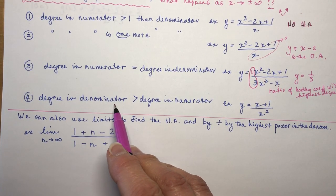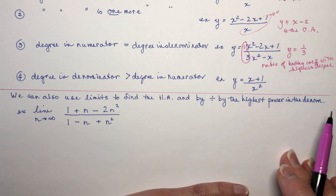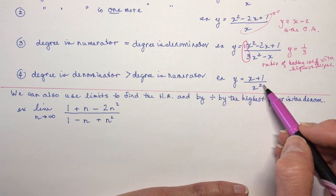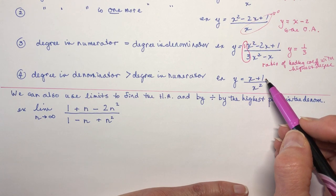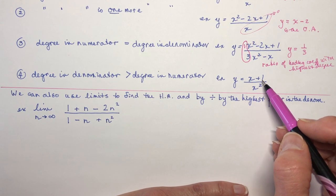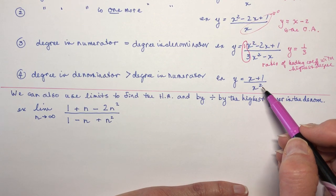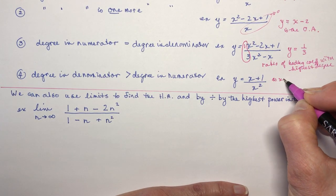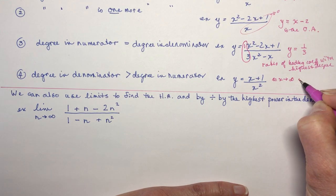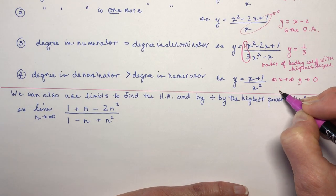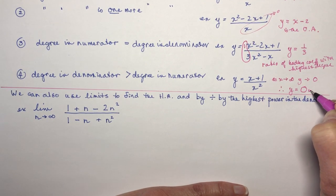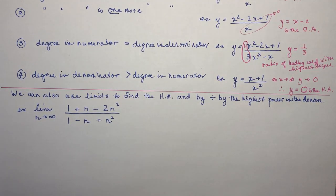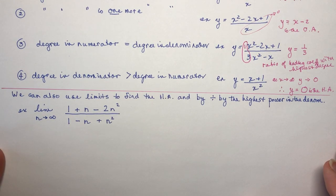Case 4: degree of denominator is greater than degree of numerator. For (x+1)/x², as x approaches infinity the denominator grows much faster — 1001 divided by a million approaches 0. So the horizontal asymptote is y = 0. Those are the four possibilities: numerator much bigger, one more, equal degree, or denominator bigger.